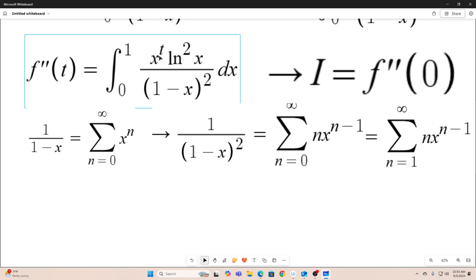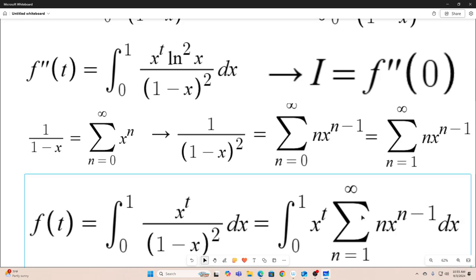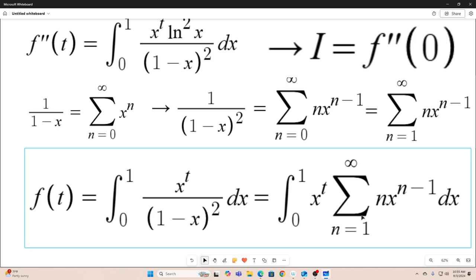So now we're going to replace this 1 over 1 minus x all squared with this sum right here. So this is what we have. Our f of t is equal to this. And then I switch the summation and integration notations.